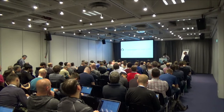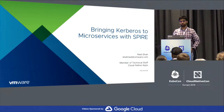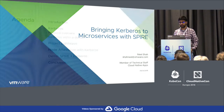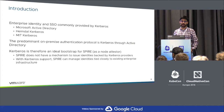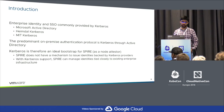I'm going to talk about how we brought Kerberos to microservices with SPIRE. I'm Neil, I work at VMware in our cloud-native apps division, and we collaborated with the SPIFFE folks to add a Kerberos node attester. Kerberos is a predominant identity stack for enterprise, and most cloud-native workloads don't have an easy way to integrate with enterprise identity stacks. Kerberos is therefore an ideal bootstrap for SPIRE to attest nodes in a cloud-native environment.